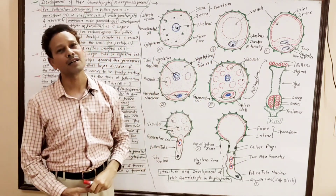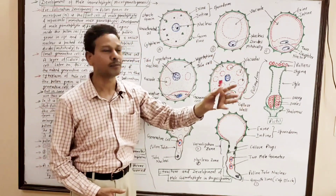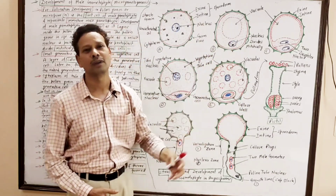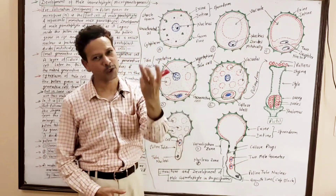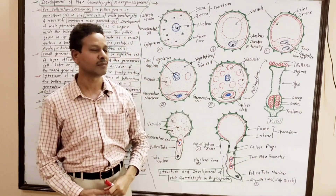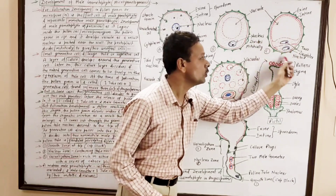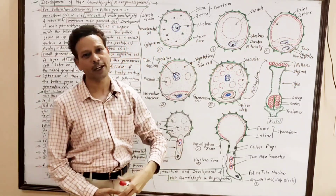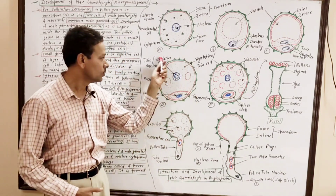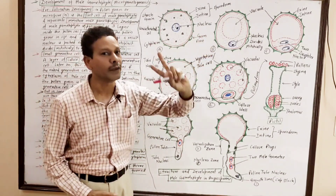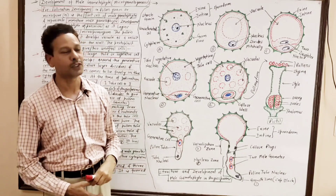The microspore becomes enlarged after absorbing nutrients. In that cytoplasm or protoplasm, one or more vacuoles appear. Later on, the protoplasm undergoes the first mitotic division. First, nuclear division — karyokinesis — occurs, resulting in two daughter nuclei. Later on, cell wall formation also occurs. As a result of this first mitotic division in the microspore, two unequal cells are formed.